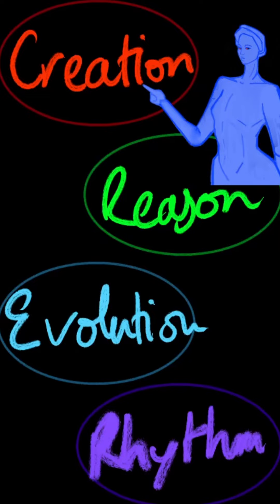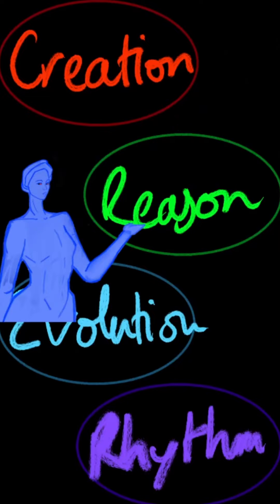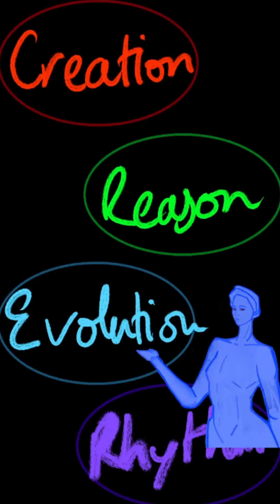How was the group created? You want to define the reason why the group was created. The characters may have joined voluntarily, or they may have been forced to. After this, you want to translate the group's evolution.